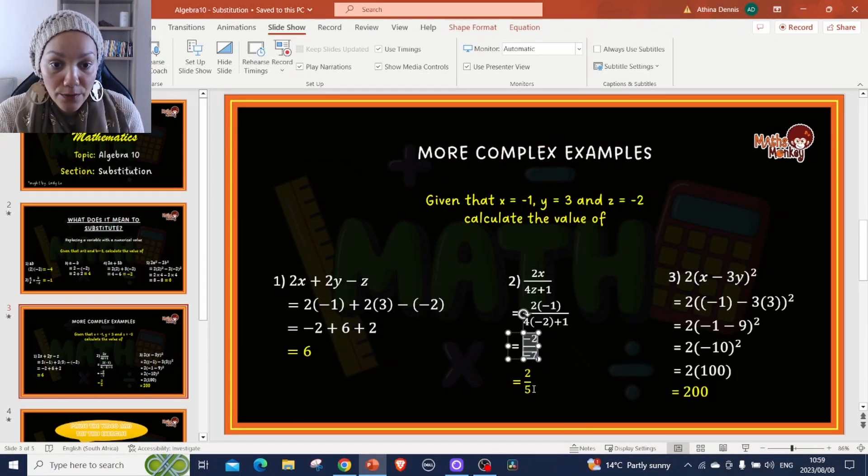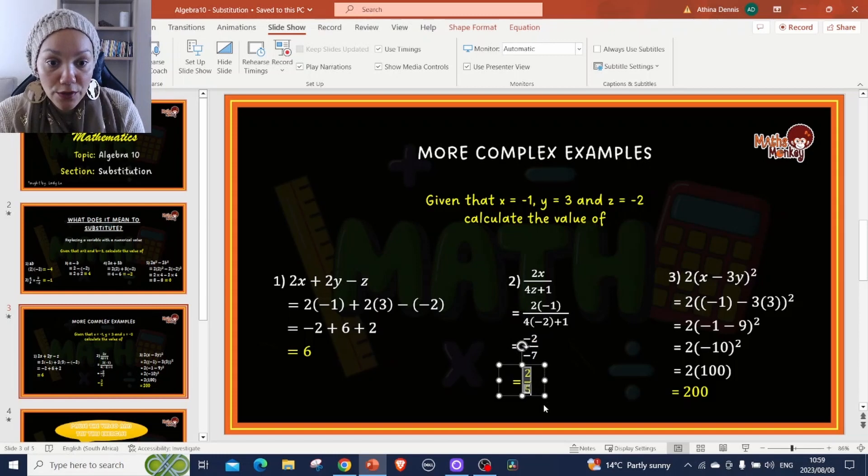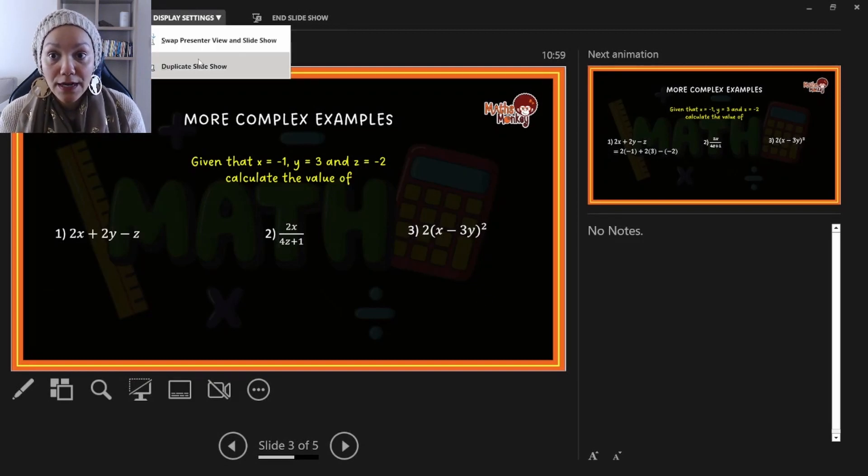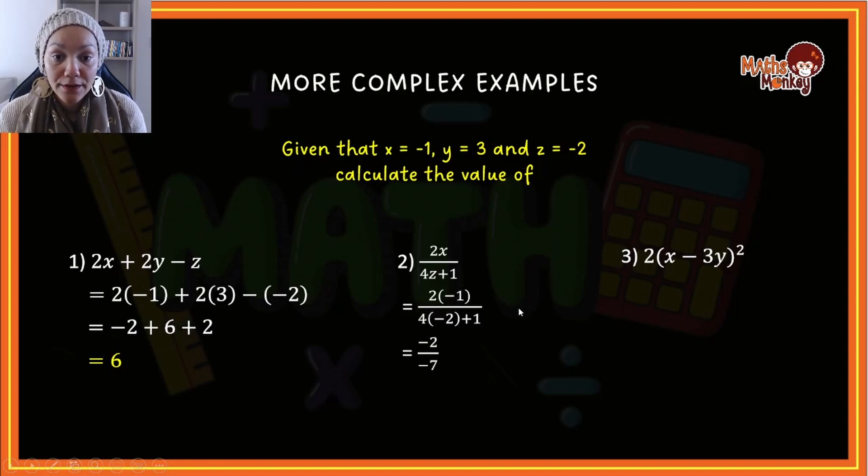This here should actually be negative 7. Let's fix that quickly for you so I don't confuse you. Your answer is then negative divided by negative is a positive, and 2 over 7 remains 2 over 7.